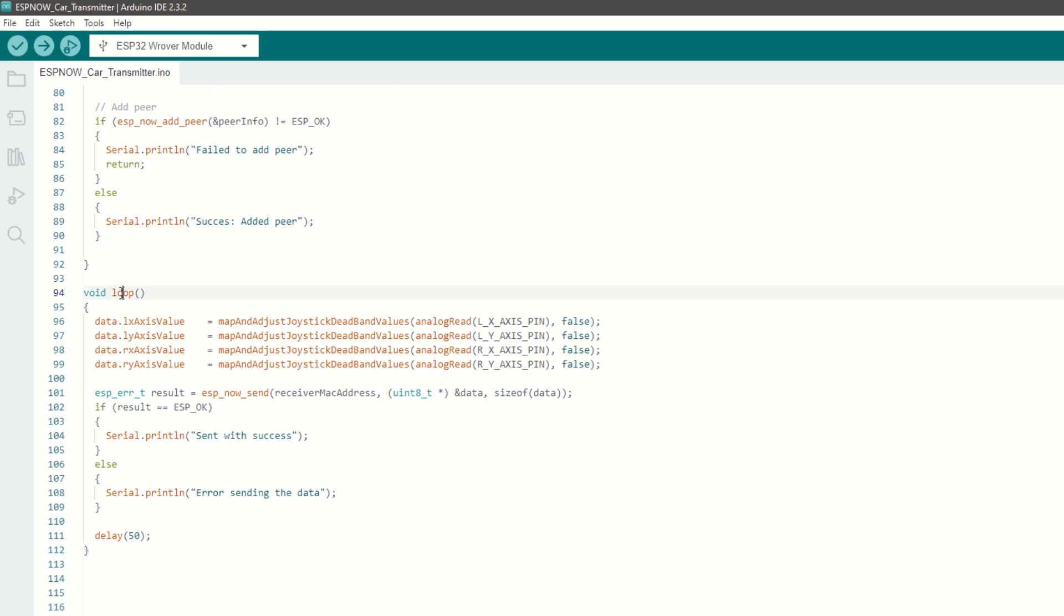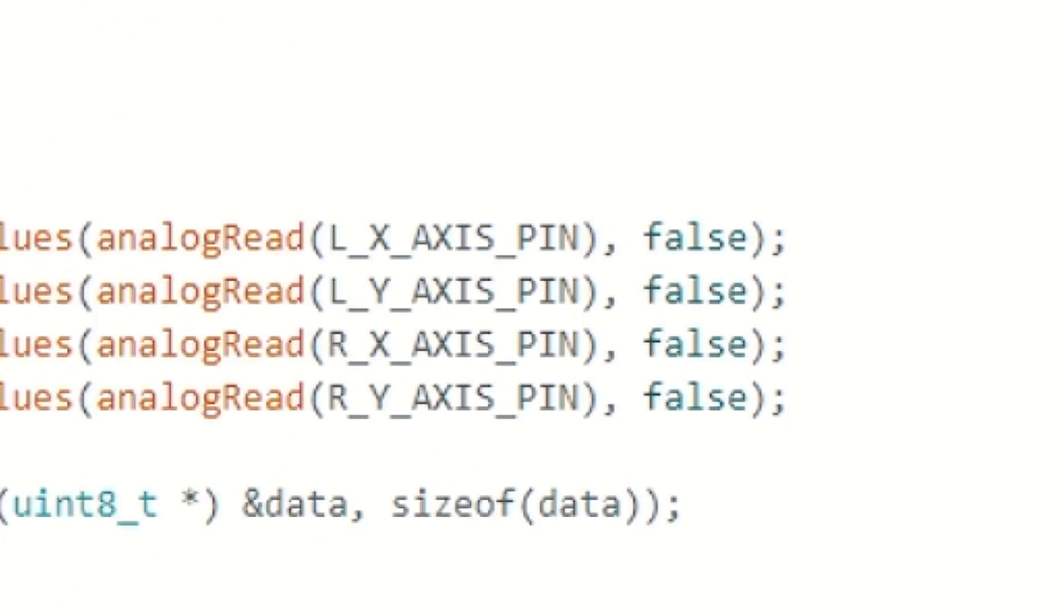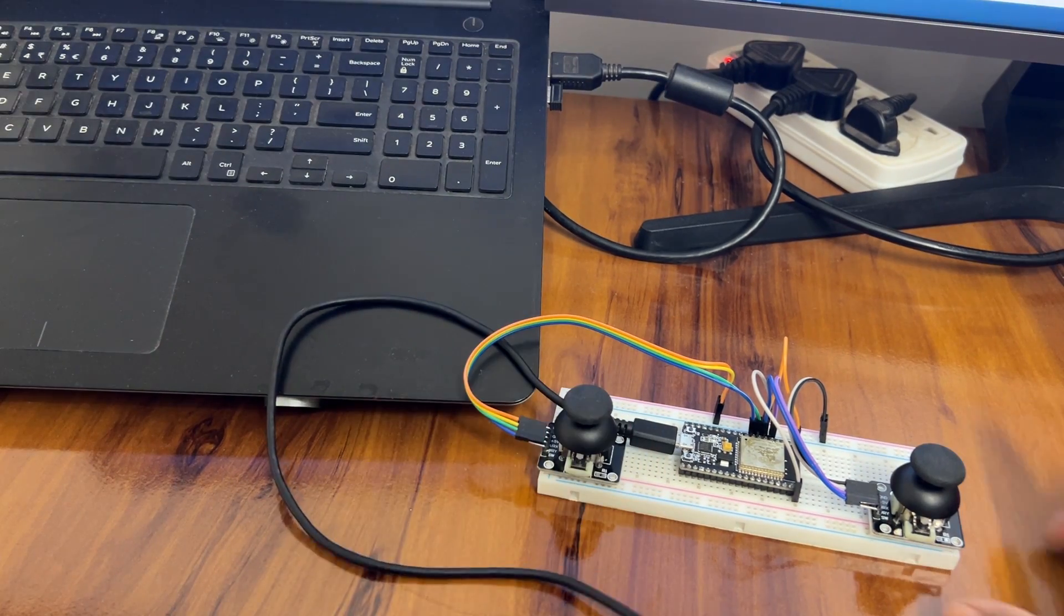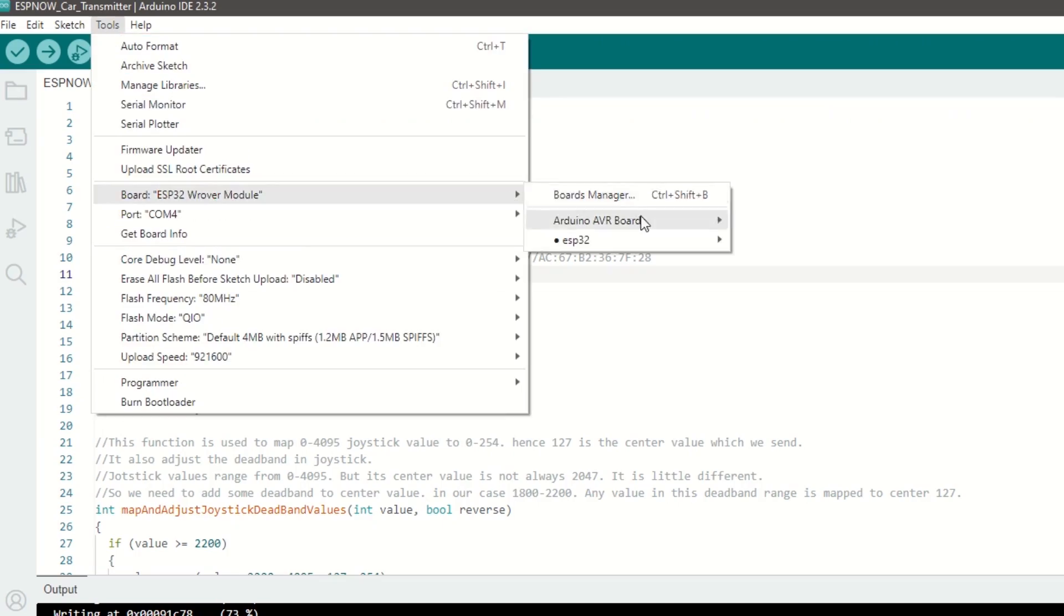Inside loop function, read the left and right joysticks values. Now we will send the data through ESPnow using ESPnow send function. We will add some delay for data to be sent. I have provided the link to the code in the description below. You can upload it directly. Connect transmitter ESP32 module to laptop using USB cable. Select ESP32 Dev module and port. Hit upload.